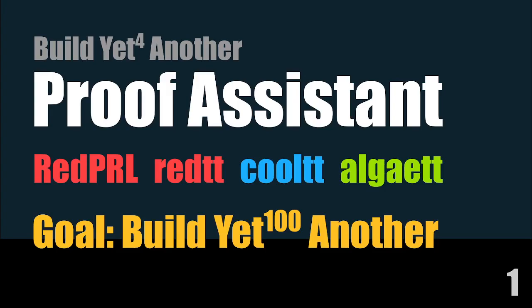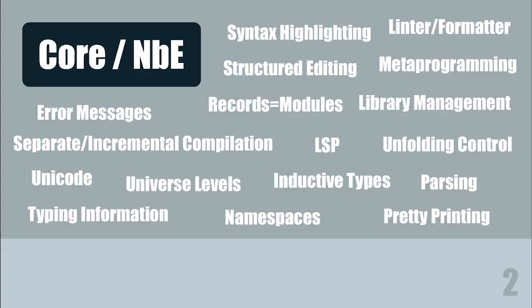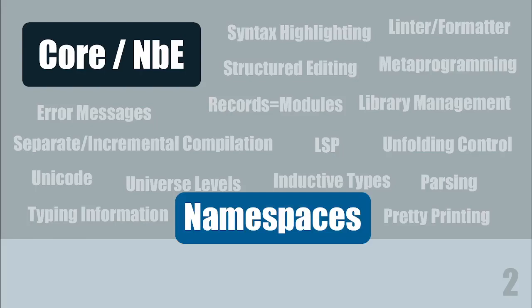After building a few proof assistants, we realized that there is a serious problem. There is a big difference between a type checker — the core that is probably using normalization by evaluation — and a real proof assistant that will actually assist you to complete a proof. In order to make a real proof assistant, you probably want to implement many items on this slide. And this talk is about one of them, which is the namespaces.